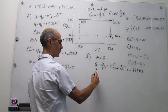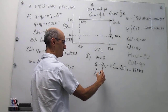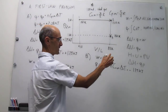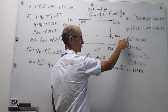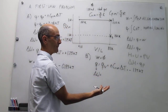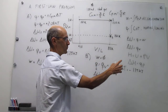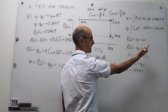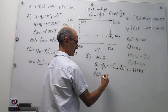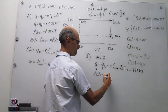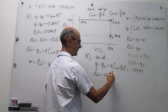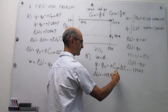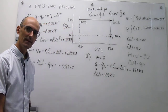For ΔU in step B, we can use either ΔU = Q + W or ΔU = n·C_Vm·ΔT. Since work is zero at constant volume, ΔU = Q = −1.25 kJ.